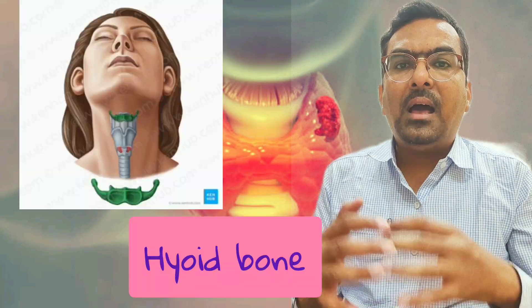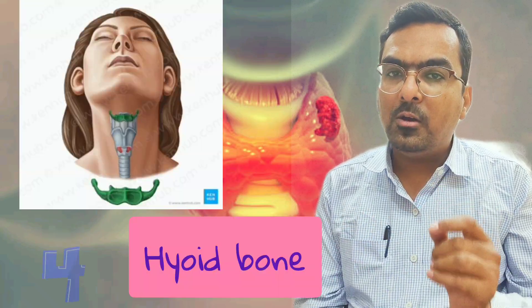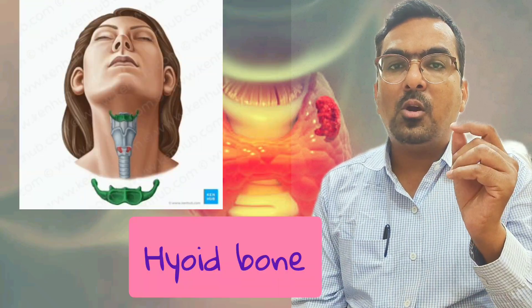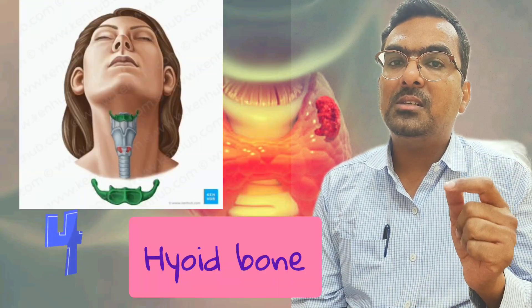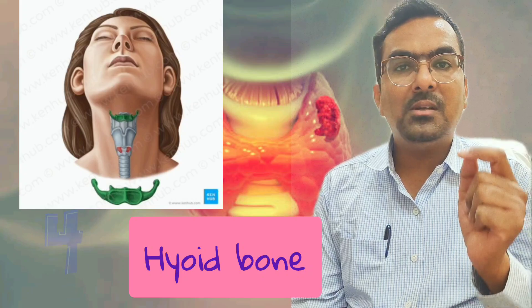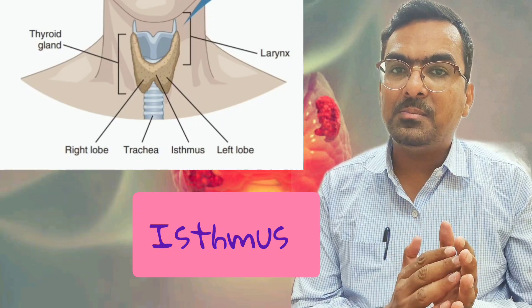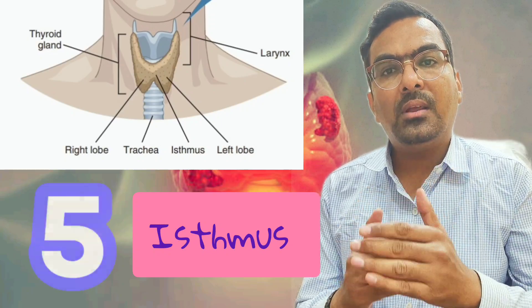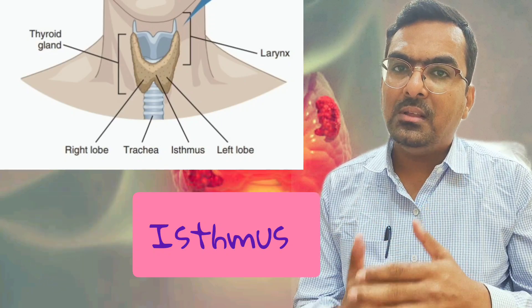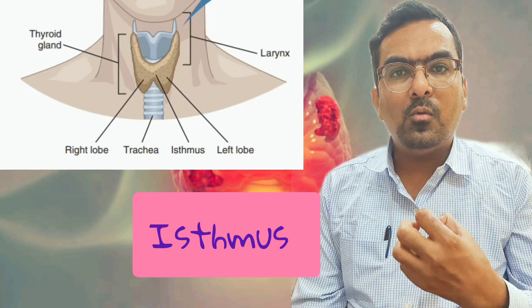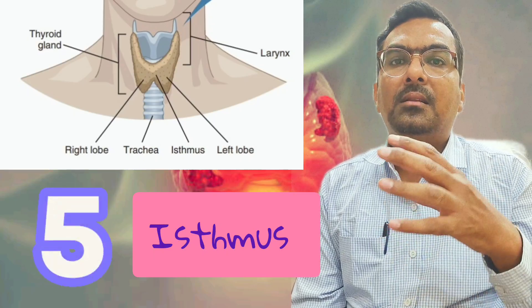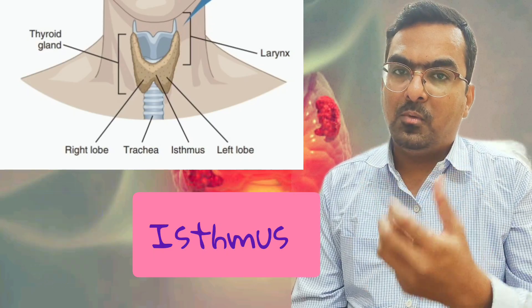The fourth reason is the hyoid bone and muscles. The thyroid gland is connected to the hyoid bone and the surrounding muscles, assisting its upward movement during swallowing. The fifth reason is the isthmus and tracheal attachment. The isthmus of the thyroid has a direct attachment to the trachea, so during deglutition the trachea moves and along with it the thyroid gland also moves.